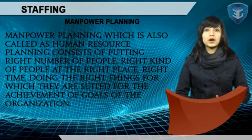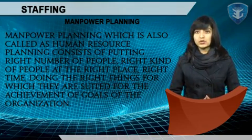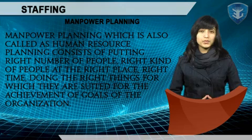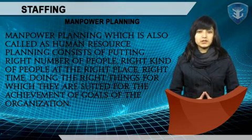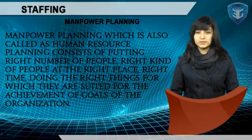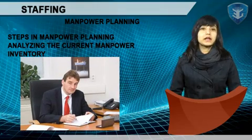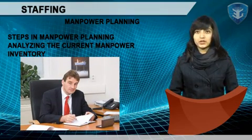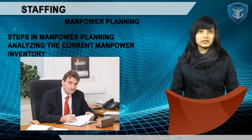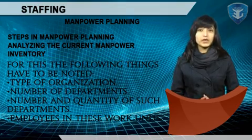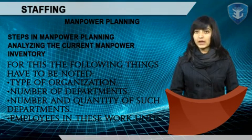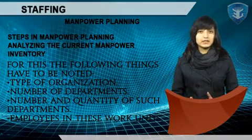Manpower planning, also called human resource planning, consists of putting the right number of people, the right kind of people, at the right place, at the right time, doing the right things for which they are suited, for the achievement of organizational goals. Steps in manpower planning: first, analyze the current manpower inventory — the current manpower status must be analyzed, noting the types of organization, number of departments, and number and quantity of employees in these work units.